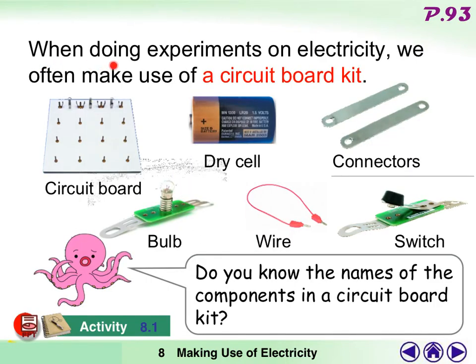When doing experiments on electricity, we often make use of a circuit board kit. For example, circuit board and dry cell connectors, bulb, wire, and switch. You should work hard on their spellings, because they always appear in this chapter.